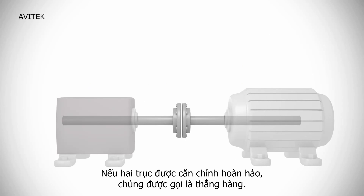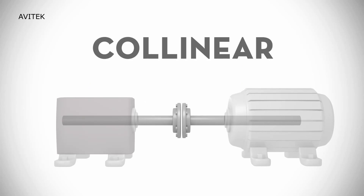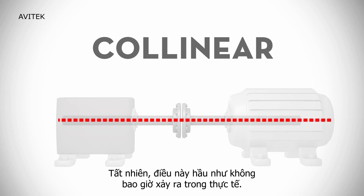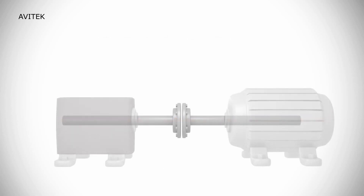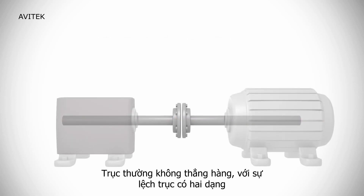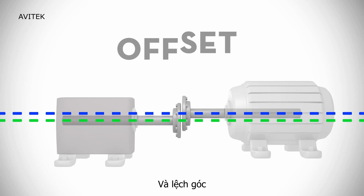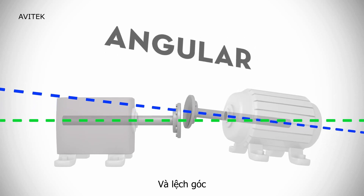If two shafts are perfectly aligned, they are said to be collinear. Collinear means that a single straight line will define the center of both shafts. Of course, this is almost never the case in the field. Shafts are usually out of alignment, with the misalignment taking two forms: offset misalignment and angular misalignment.